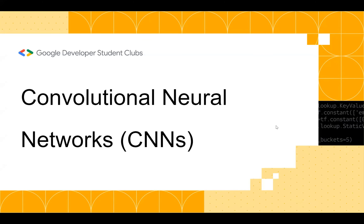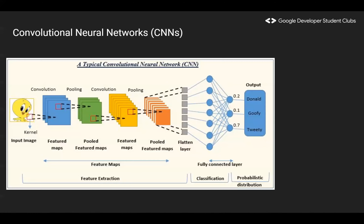The theory behind how computer vision models work is based on convolutional neural networks, or CNNs. CNNs are the map behind how these models work. CNN is a really complicated process — even scientists who have studied it their whole lives are unable to fully comprehend the power of this model. There are many different ways to implement CNNs, but the most common approach involves convolutional and pooling layers applied in sequence.